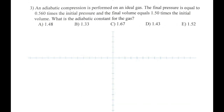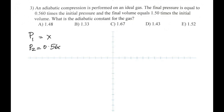Question 3 is about adiabatic compression. The final pressure is 0.560 times the initial pressure, and the final volume is 1.50 times the initial volume. We are asked to find the adiabatic constant gamma (the ratio of specific heats).